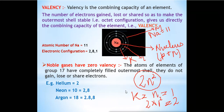In the K shell only two electrons can be present — not more than that. Like in a classroom bench where only two students can sit, if a third student comes there is no room. Similarly, if a third electron comes to the K shell it cannot be accommodated. For the L shell, n equals 2, so 2 × 2² gives eight electrons.